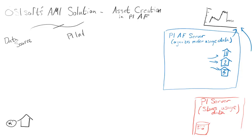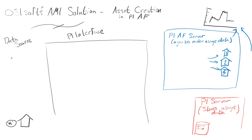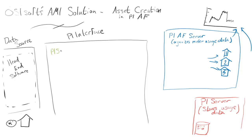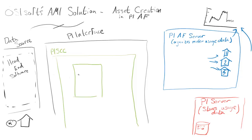So we have a data source, and we have the PI Interface. Like most, or all PI Systems, data will flow from the data source to the PI Servers. The data source is a head end — we call it the head end — it's a piece of software that just works with all those meters. And then we have PI SCC. PI SCC is the intermediary; it's the connection block between all this stuff.